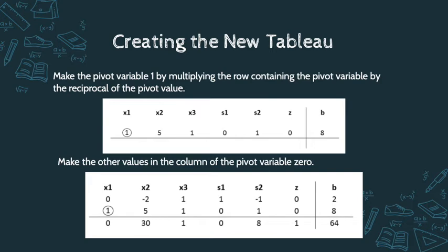Once again, we create the new tableau by making the pivot variable 1 — multiplying the row containing the pivot by its reciprocal. Then we make the other values in the pivot column zero by taking the negative of the old pivot column value, multiplying by the new pivot row value, and adding it to the old value being replaced. You keep pivoting — hence the name — until you find the optimal solution.